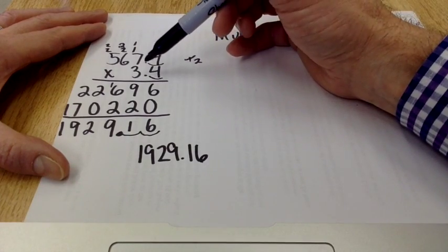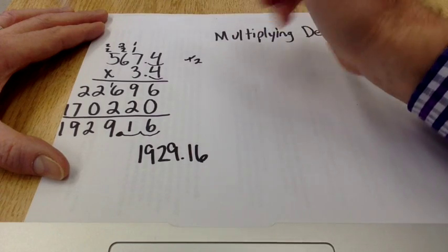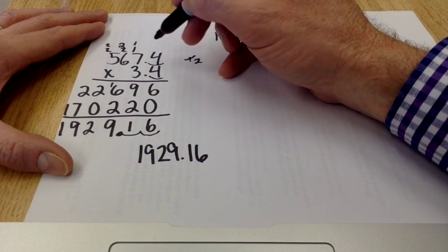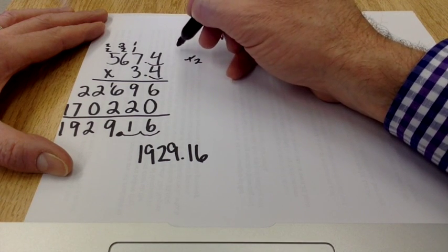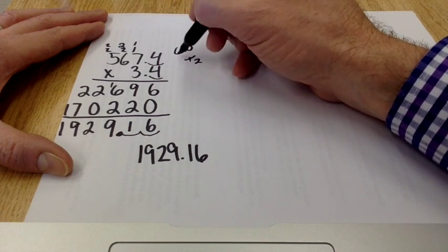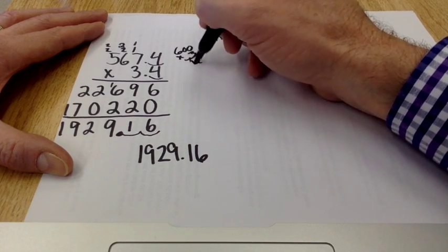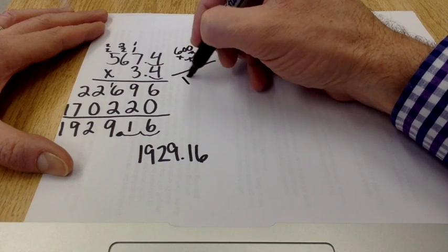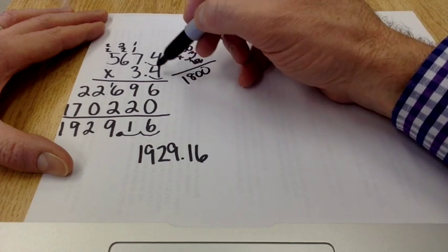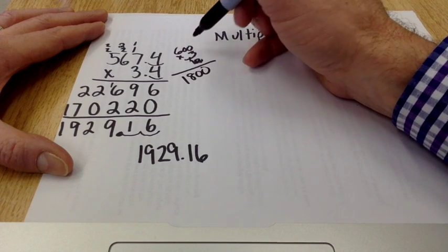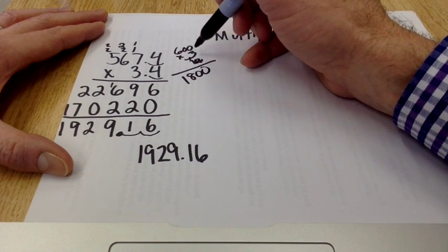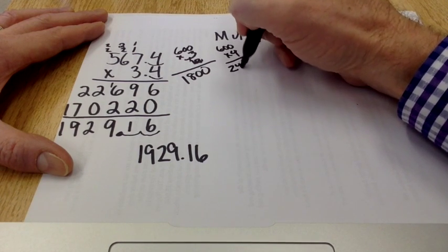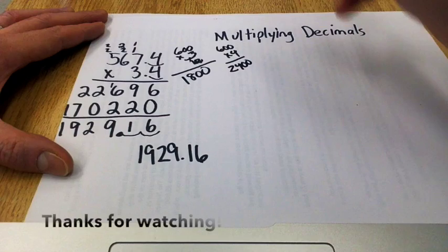And to just kind of give an idea of whether this makes sense or not, let's round that off for a second. So 567.4 is between 500 and 600, a little bit closer to 600. So if I had 600 times 3, I know that 3 times 6 is 18. So this would be roughly 1800. But I know it's much bigger than 3. It's 3.4. So I know that the answer that I should have is somewhere between 600 times 3 and 600 times 4, which is 2400.